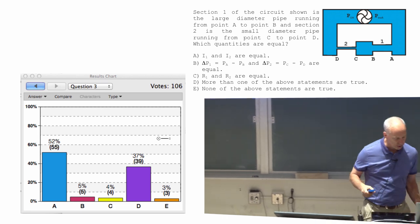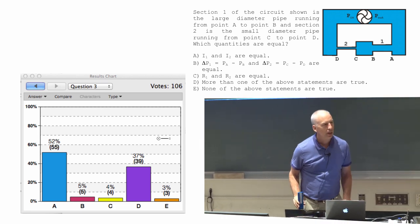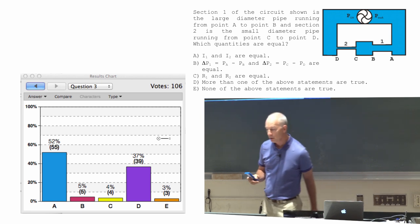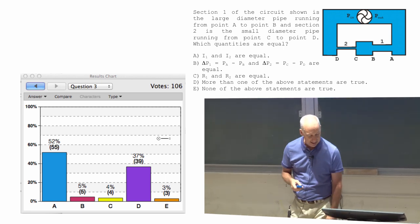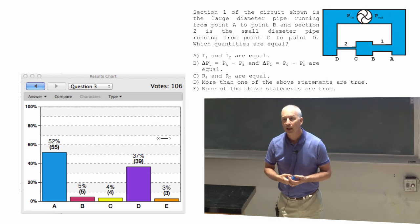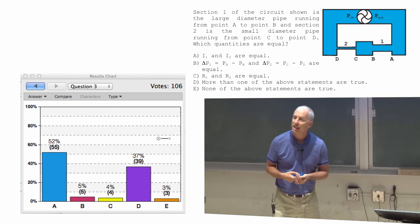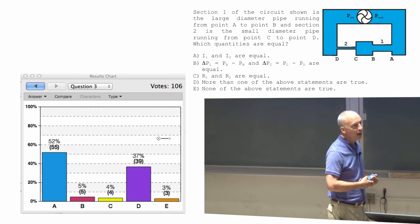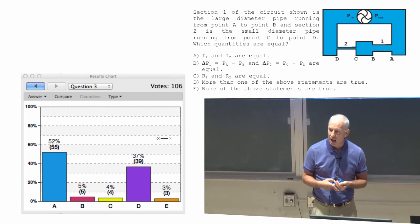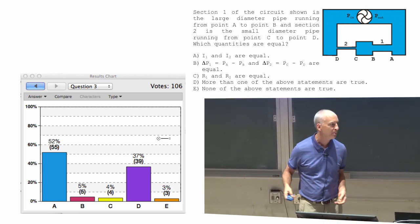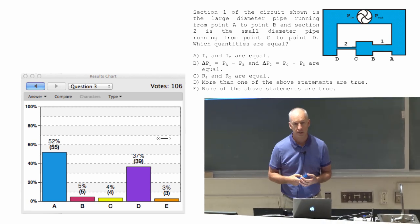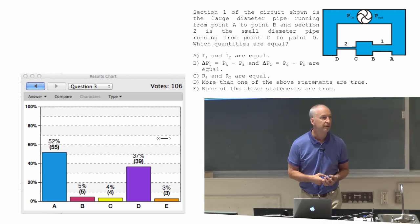So, are the pressure drops the same? No. No reason for them to be the same. The only reason there's a pressure drop from A to B is because of the resistance in that pipe. The reason there's a pressure drop from C to D is because of the resistance in that pipe. Those pressure drops are both equal to I times the resistance of the pipe, and although the currents are the same, the resistances are not. So the pressure drops will be different.